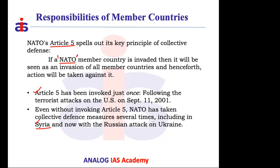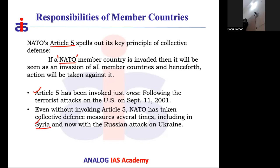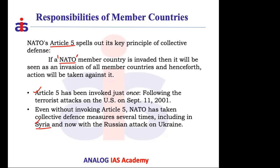In cases like Syria and others, NATO indirectly supports parties fighting against certain governments — similar to how the U.S. provides indirect support to opposition parties in Cuba, claiming the Cuban government acts against the wishes of its own people. These are examples of indirect involvement without invoking Article 5.